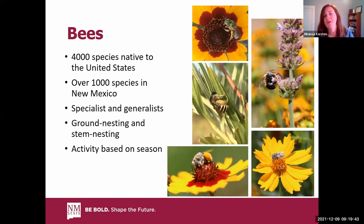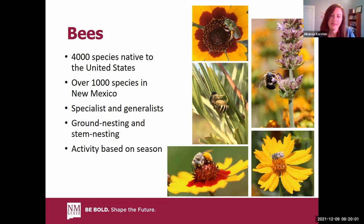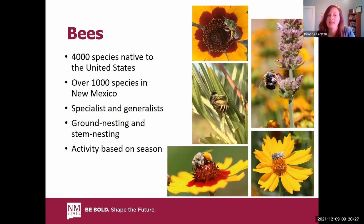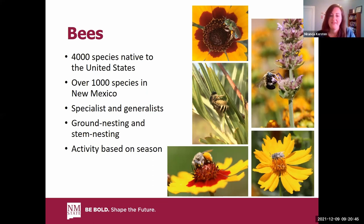Within the US, we have over 4,000 species of bees native to the country. In New Mexico, we have the third largest diversity of bees with over 1,000 species identified. Within these bees, there are both specialists and generalists. A specialist may feed only on a certain species or family of plants, while generalists can visit a wide variety. We need to consider which plants will attract them. We also have ground-nesting and stem-nesting bees. With wild bees, activity is based on season, whereas managed honey bees are active year-round above about 55 degrees Fahrenheit.